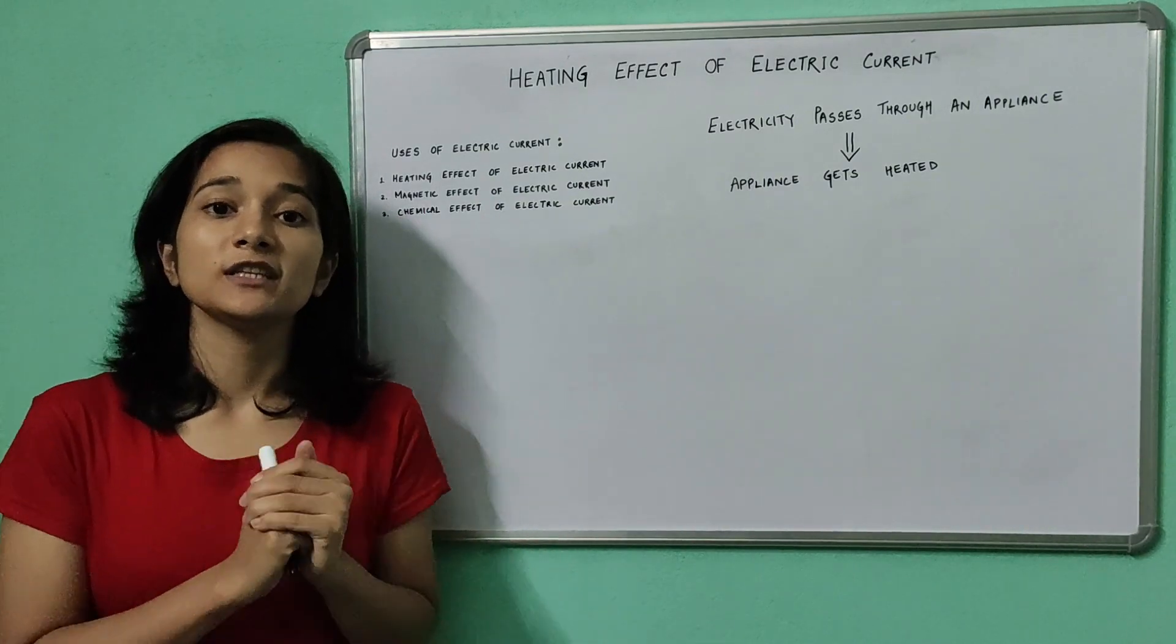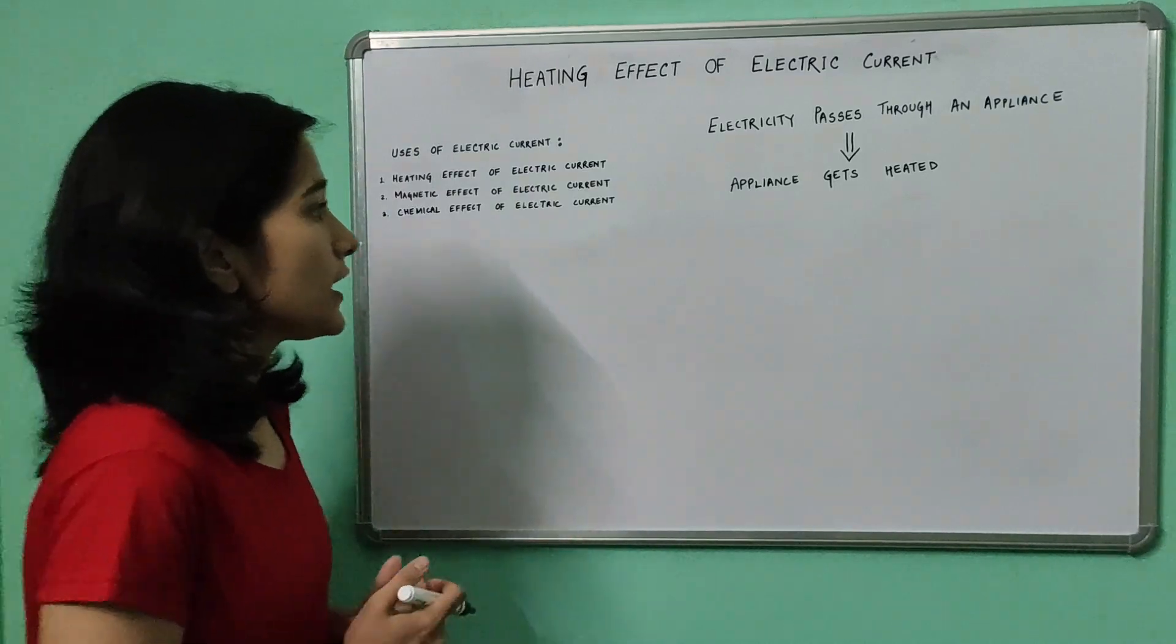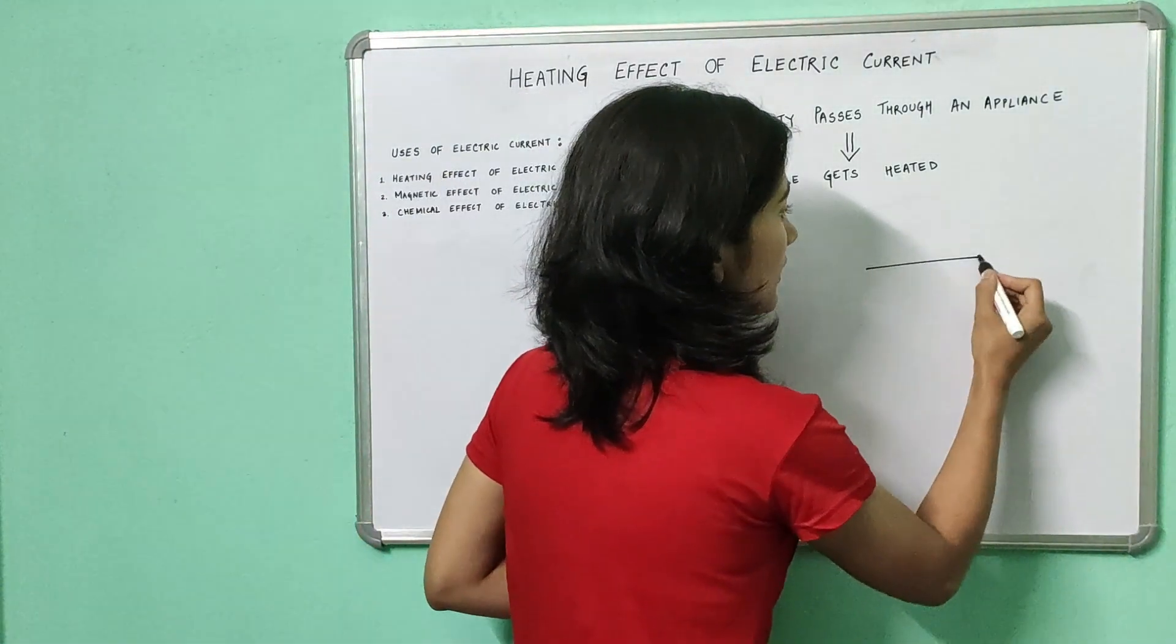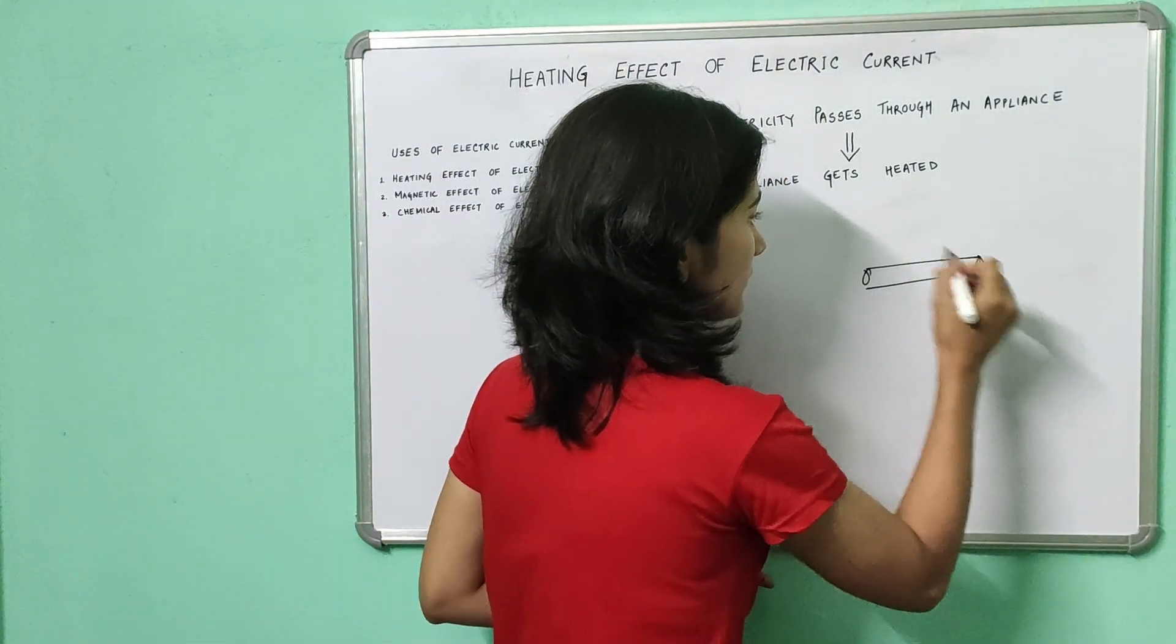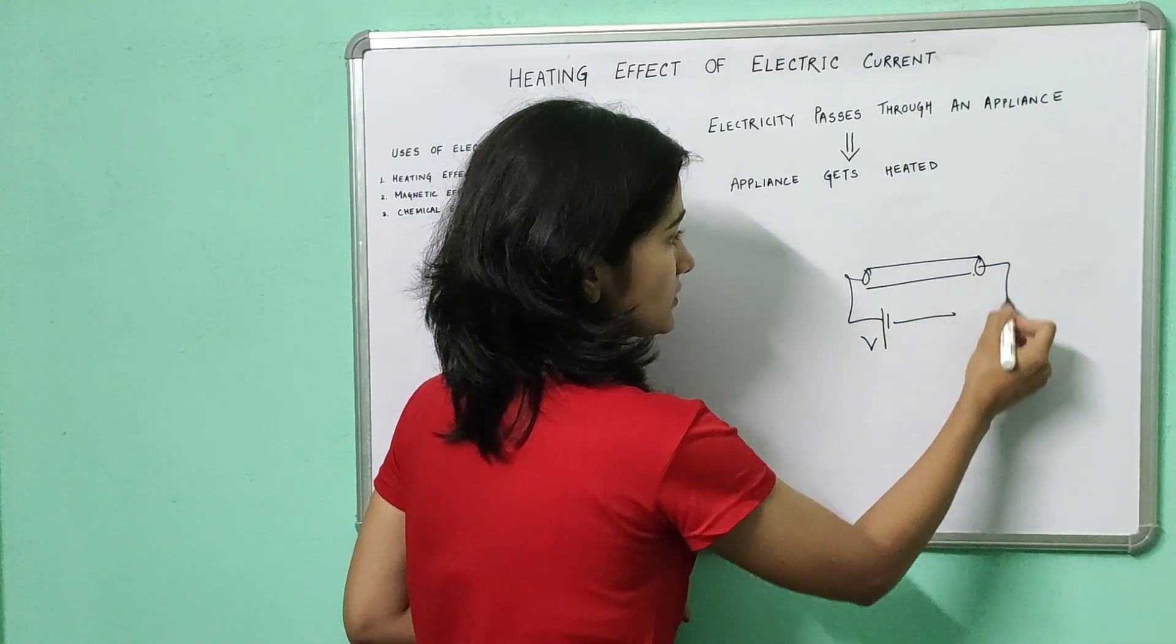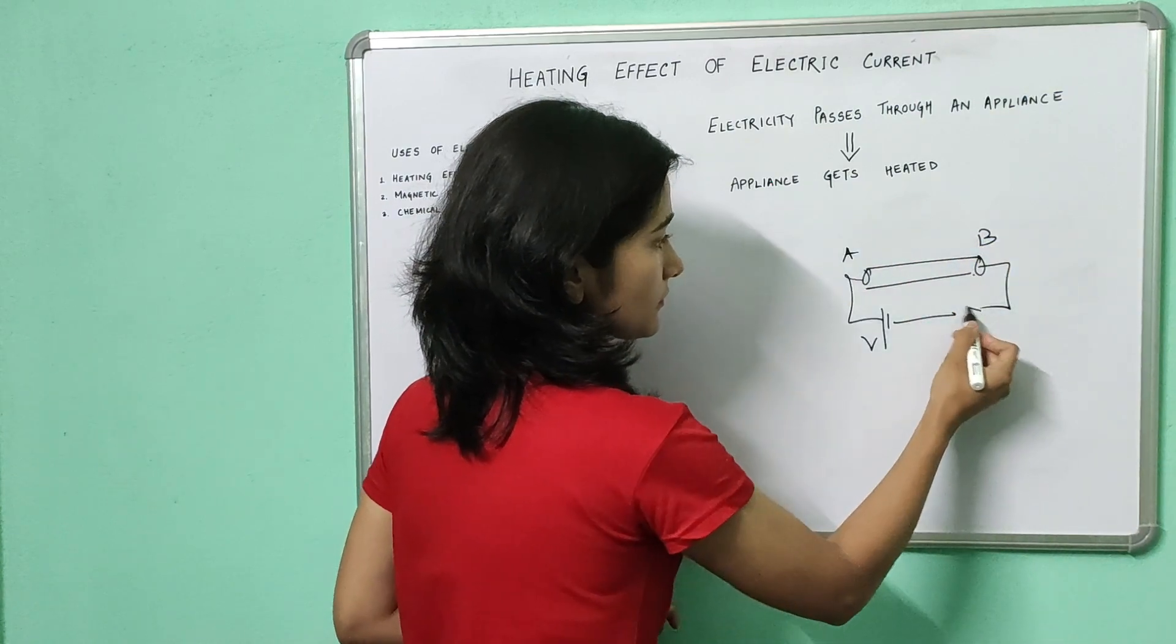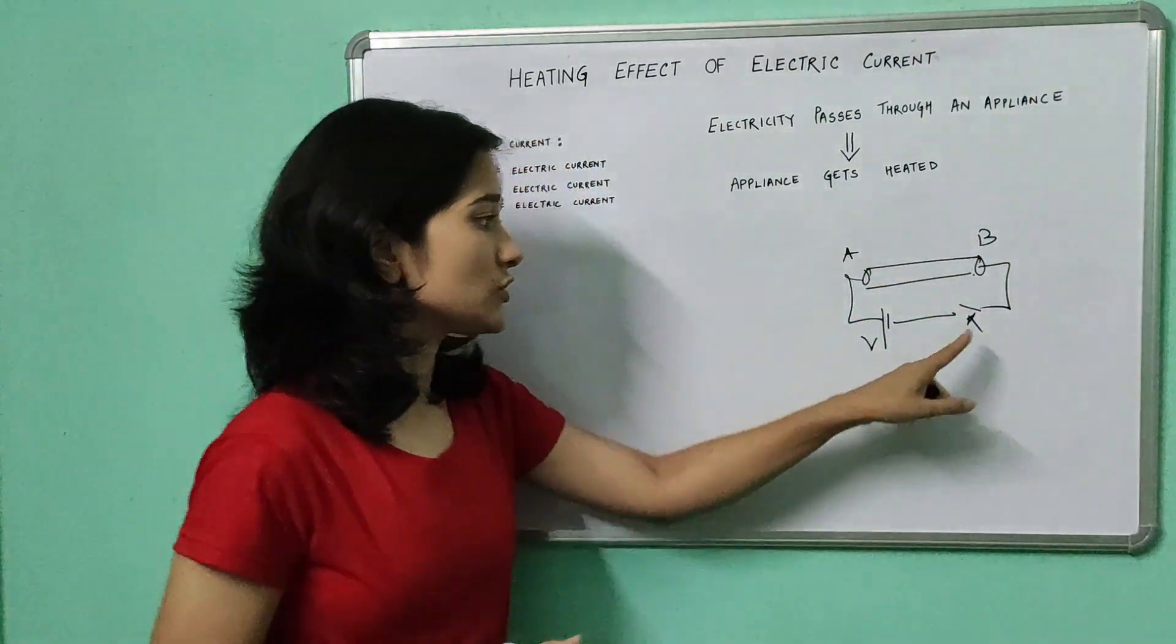So now the question is why does this happen? To know this, let me draw a conductor, a metallic conductor, and provide a potential difference V across it, across the two ends of the conductor.